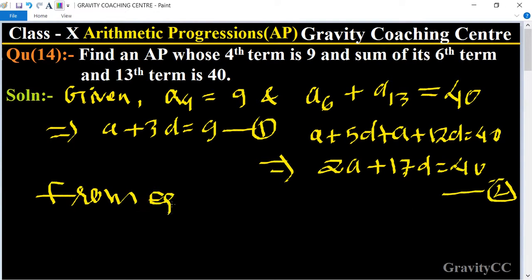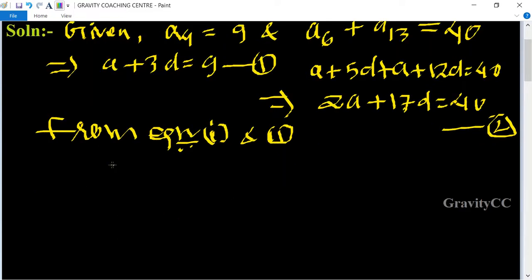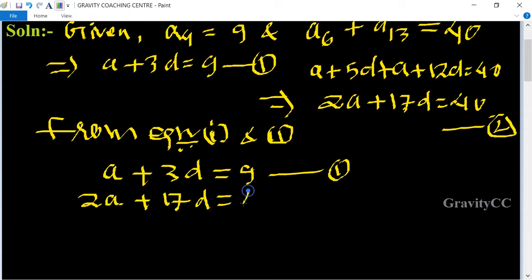From equations first and second, we get: first equation is a + 3d = 9 and second one is 2a + 17d = 40. Now multiply first by 2 and second by 1.